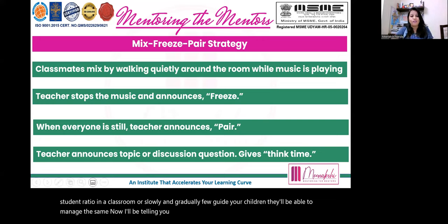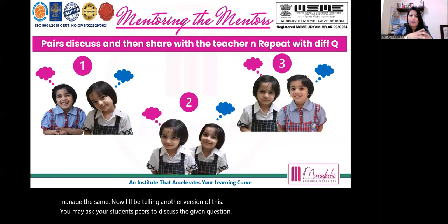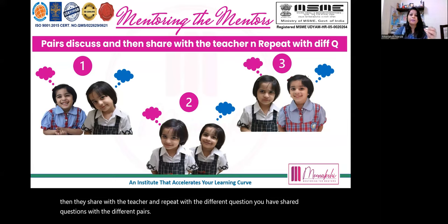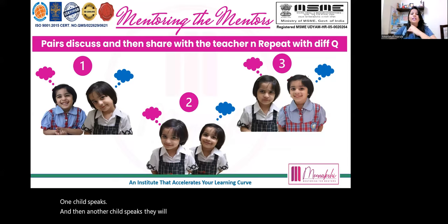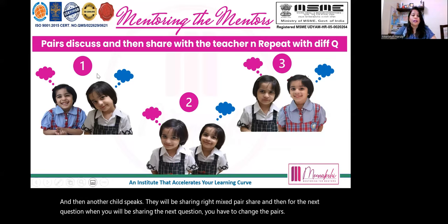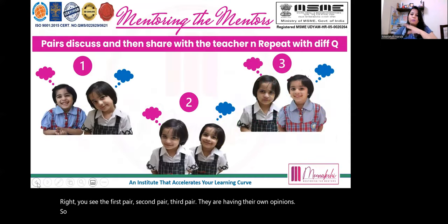Another version of mix-freeze-pair: you ask students to discuss the given question with their pair, then share with the teacher. One child speaks, then the other shares. For the next question, you change the pairs so everybody gets a chance to collaborate with each other. Different pairs are formed with each new question, giving students varied interaction and collaboration opportunities throughout the activity.